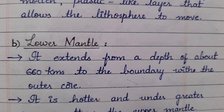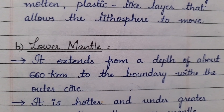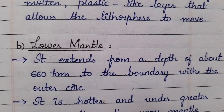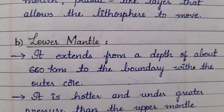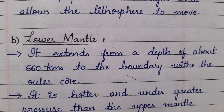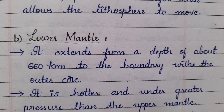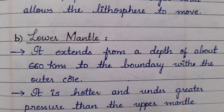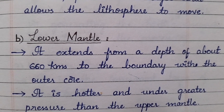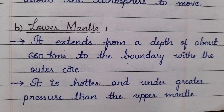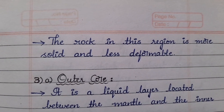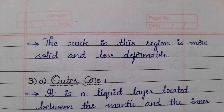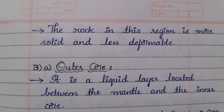The lower mantle extends from a depth of about 660 kilometers to the boundary with the outer core. It is hotter and under greater pressure than the upper mantle. The rock in this region is more solid and less deformable.